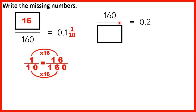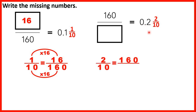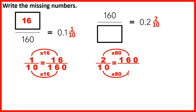Now, if a fraction has a numerator of 160, what is the denominator if it equals 0.2? Since 0.2 is the same as 2-tenths, we need an equivalent fraction to 2/10 with a numerator of 160. Since 160 divided by 2 is 80, we multiply by 80: 2 times 80 is 160, and 10 times 80 is 800. So the denominator is 800.